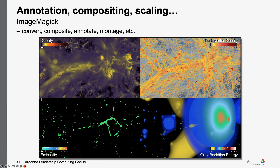Both VisIt and ParaView have decent tools for adding annotations directly to your visualizations and renderings. I tend to do that as a post-processing step, because there are times when I might want to use those images for some other purpose — in which case maybe I don't want all the annotations on it. So I tend to generate a stack of images with no annotations at all, and then go back and generate another stack that adds annotations on top of it, so I still have the original images if I want to use them for some other purpose.